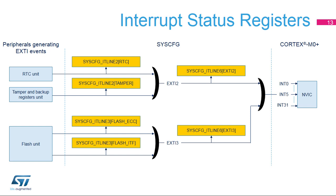In the INT5 interrupt service routine, software should first read the SYSCFG IT Line 6 register to determine whether EXTI2 or EXTI3 is pending, and then read either the SYSCFG IT Line 2 or SYSCFG IT Line 3 register to determine the exact cause of the interrupt.